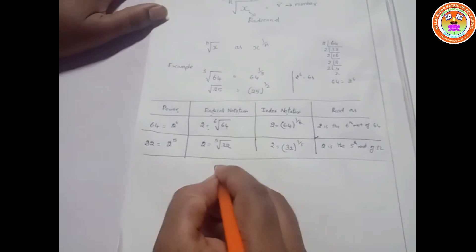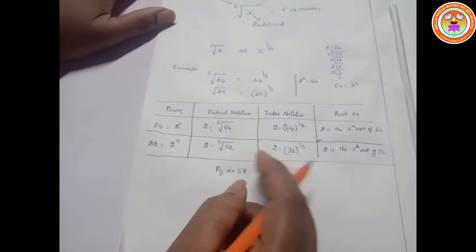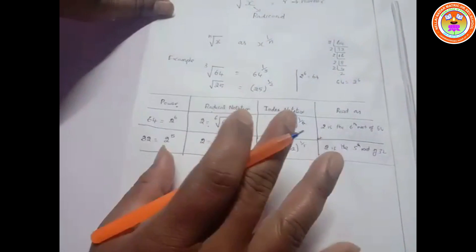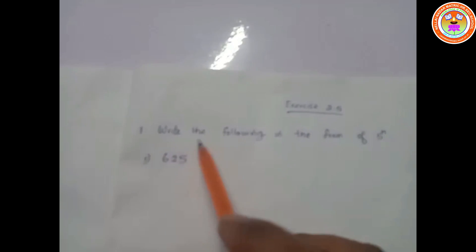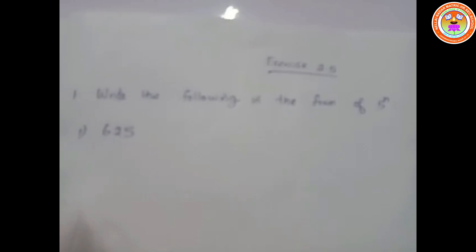You have some more examples on page number 58, so go through those. Now we will see Exercise 2.5. Write the following in the form of 5 to the power of n. The given number is 625.